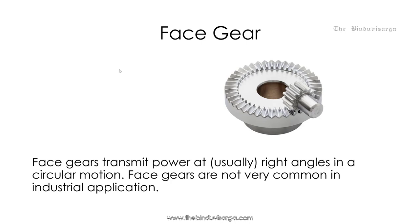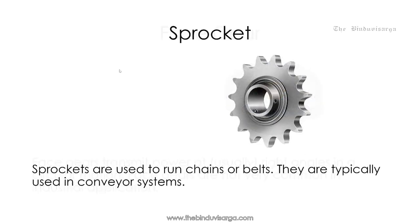Face gears: face gears transmit power at right angles in a circular motion. Face gears are not very common in industrial applications. Sprockets: sprockets are used to run chains or belts, and are typically used in conveyor systems.